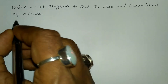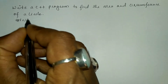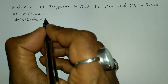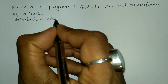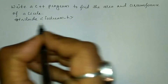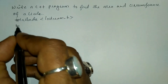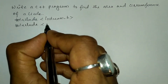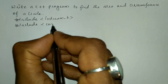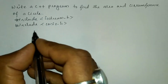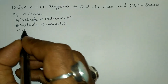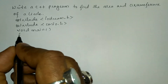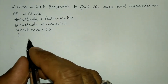Let us write the preprocessor directives: hash include in angular brace we are going to write iostream.h header file. The next preprocessor directive is hash include and in angular brace we are going to write conio.h header file. Next we are going to write the main function with a curly open brace.